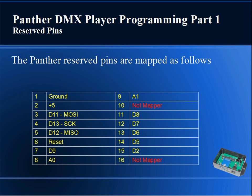The Panther reserve header pins are mapped as follows: Pin 1 goes to ground, pin 2 is positive 5 volts. Pin 3 is digital pin 11 in the Arduino IDE, also known as the master out slave in. Pin 4 is digital pin 13, which is the clock. Pin 5 is digital pin 12, master in slave out. Pin 6 is mapped to the reset pin on the chip. Pin 7 is equivalent to digital pin 9 in the IDE. Pin 8 is equivalent to analog pin 0.